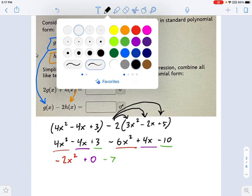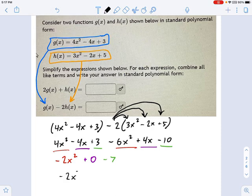So in the end, what I'm left with here is negative 2X squared minus 7. That would be my answer.